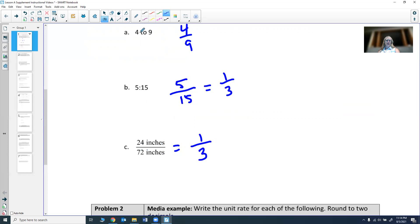So we get 1 over 3. And one of the things I notice is my inches will cancel from top and bottom because they're the same units. So I get 1 third as that ratio.